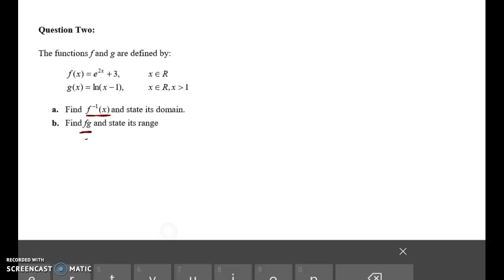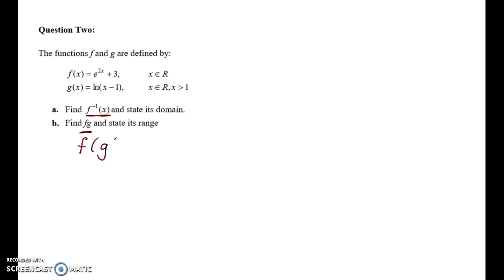Now fg looks hard, but it's not. All that means is it's f of g of x. And when we're working with inverses and functions, we're always thinking about what values can we put in, so the x values that we can put into the domain, and what comes out is the range.